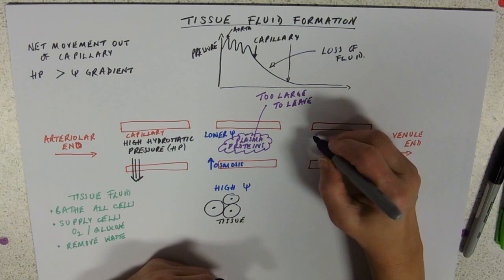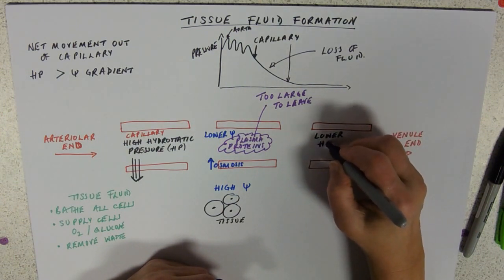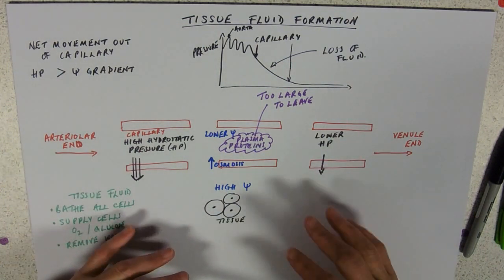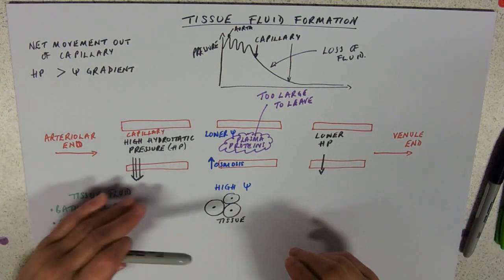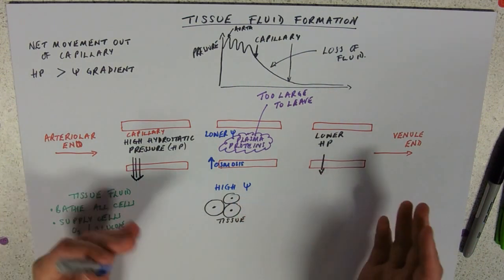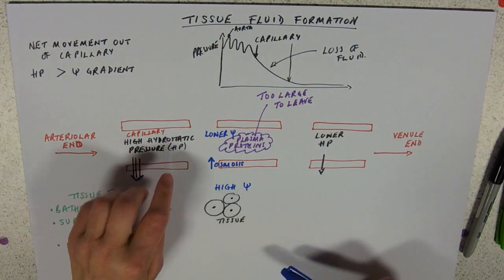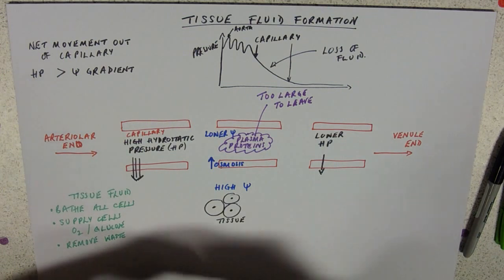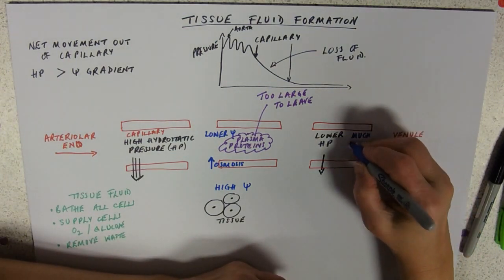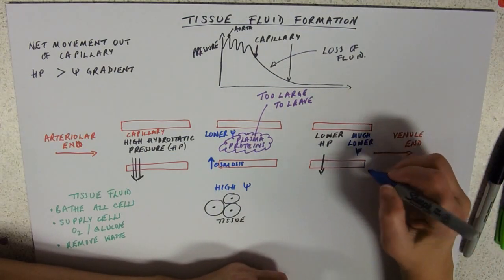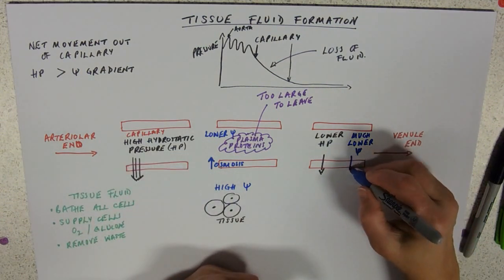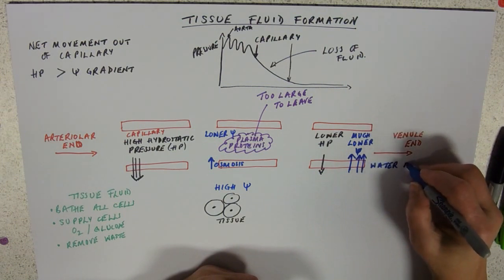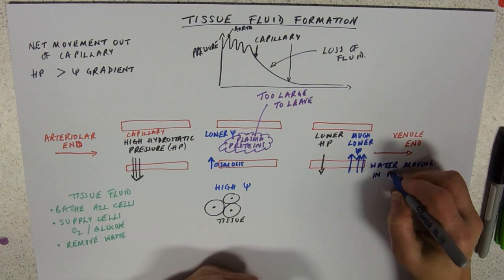Here we've got loss of fluid. So at the other end, at the venule end of the capillary, we've got a much lower hydrostatic pressure. It might only be just forcing that out a little bit. It will still be a bigger pressure than the pressure in the tissue fluid, but it's not as big as it was. Here we've still got a very high water potential. We've still got all this water from the hydrostatic pressure forcing it out.